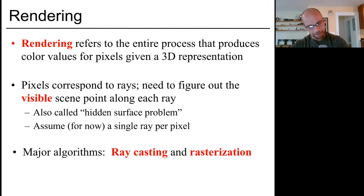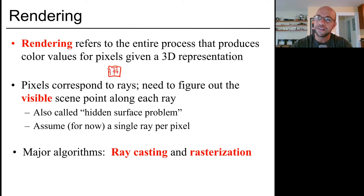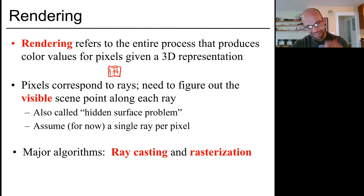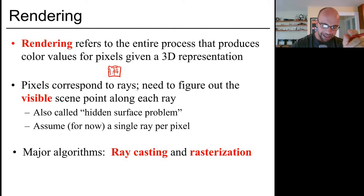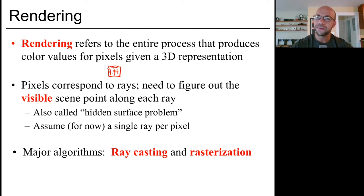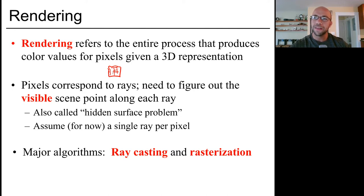Rendering produces color values given a representation of a 3D scene, and pixels roughly correspond to rays from your eyeball into the image plane. There's a debate about whether the pixel color should be the average color inside the square — we'll discuss anti-aliasing in a few weeks. For now, assuming just one ray per pixel, our task is to figure out what object we're actually seeing in that pixel, and then compute the color.